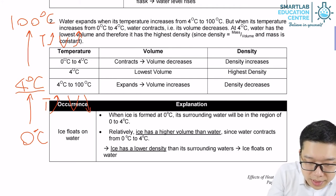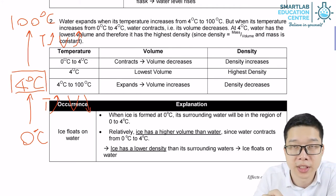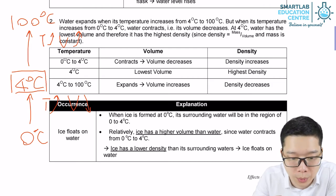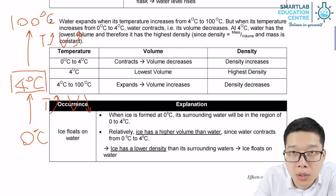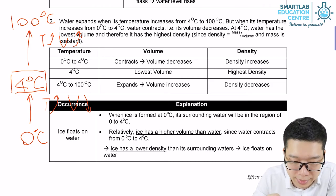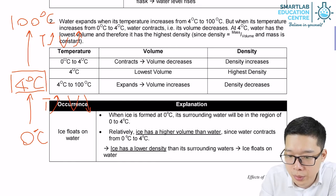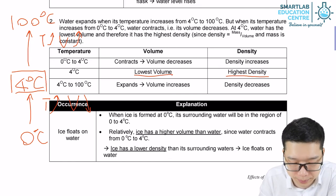So 4 degrees Celsius is the special point for pure water — it has the smallest volume at that temperature, and in other words, it has the highest density.